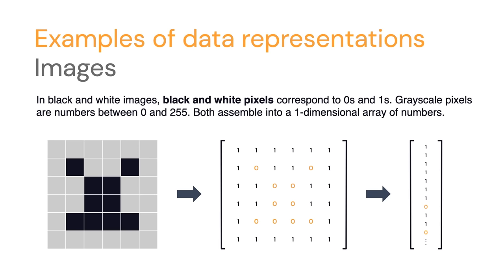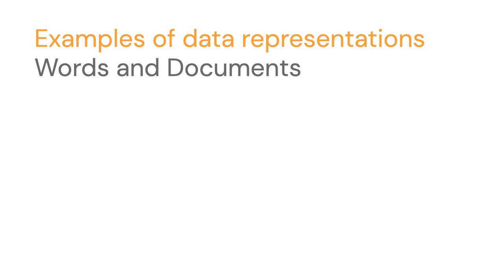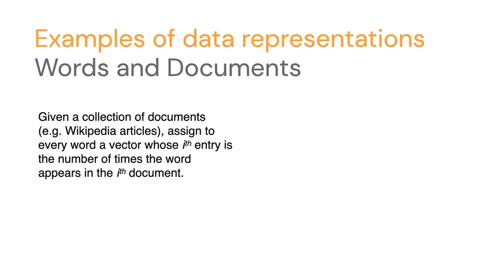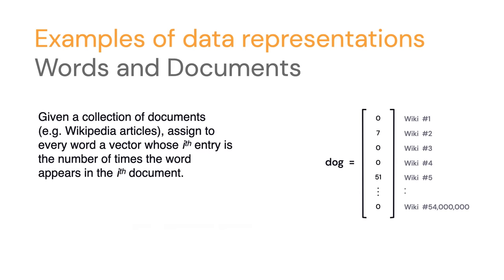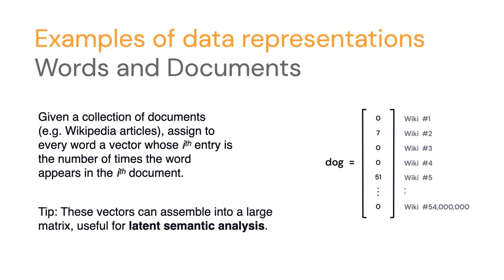Another example is text or words and documents. Suppose you have a whole bunch of articles, maybe from Wikipedia, and you want to represent the words by vectors. Here's one idea: take a word you're interested in, like 'dog,' and count the number of times it appears in each of your articles, then list those counts in a vector. Maybe 'dog' appears zero times in the first article — so put a zero in the first entry — and seven times in the second article, so put a seven there. If you have lots of articles, this will be a very large vector in a very large dimensional vector space.